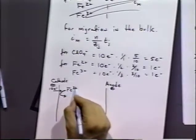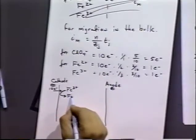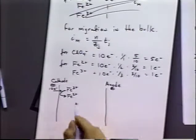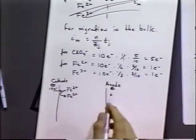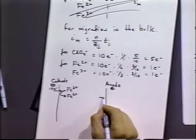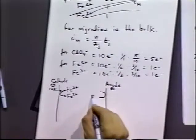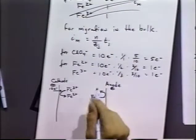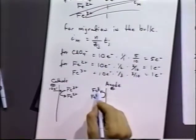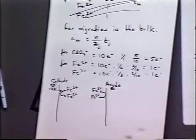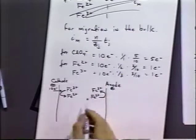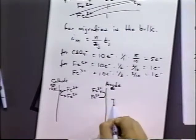So, we're going to get a current flow for the conversion of iron two plus, three plus to two plus. And at the anode, we'll have the oxidation occurring. So, we're going to have iron two plus going back to iron three plus. So, in the bulk, there's going to be a migration effect.